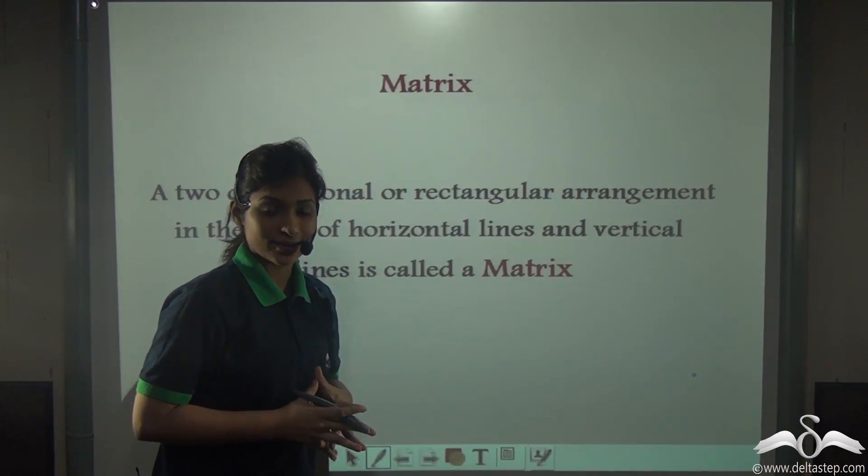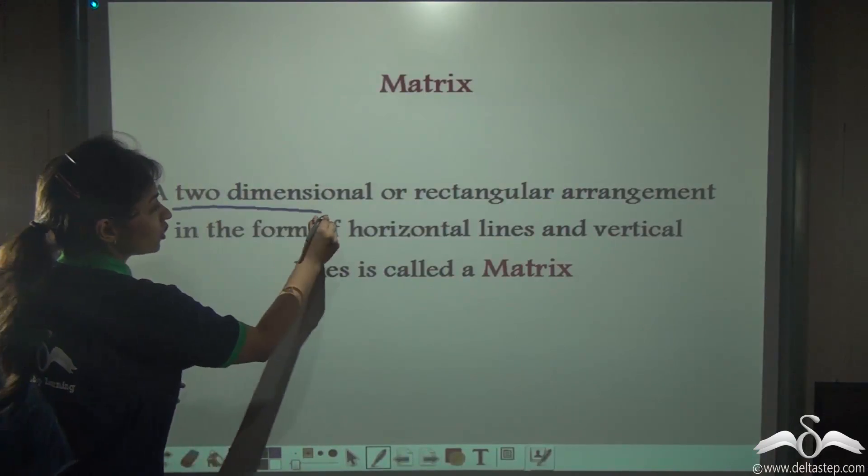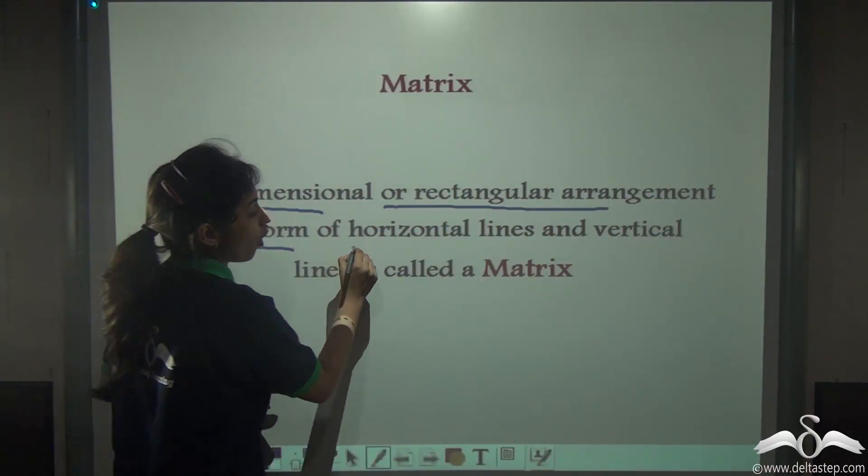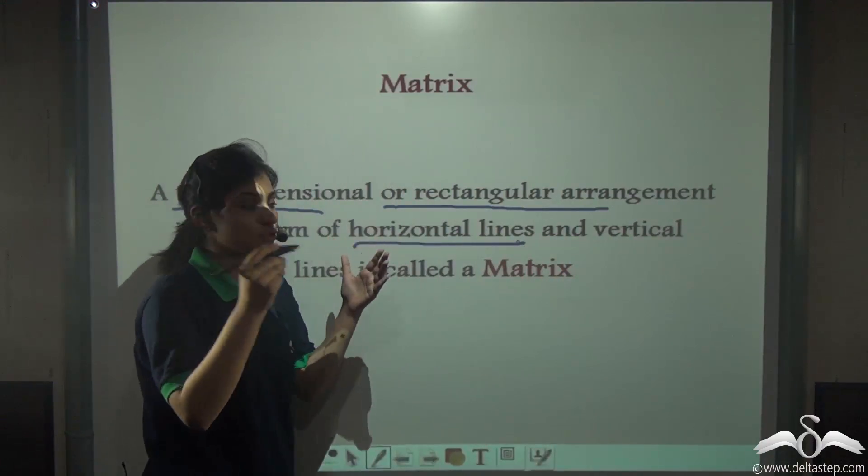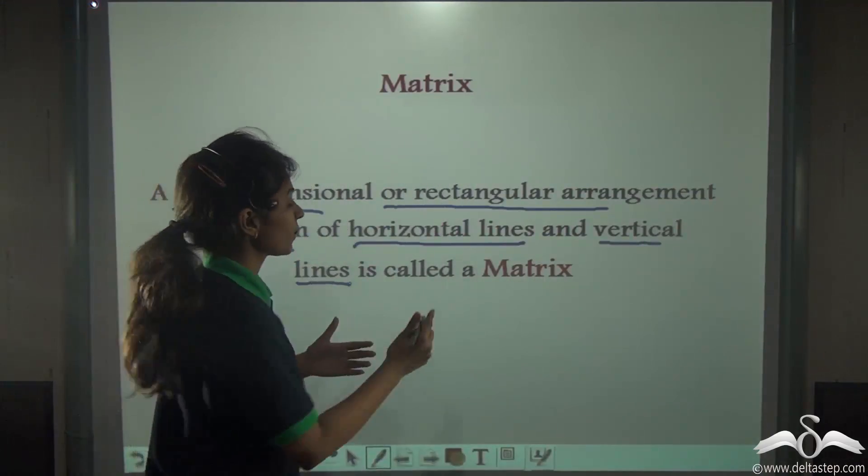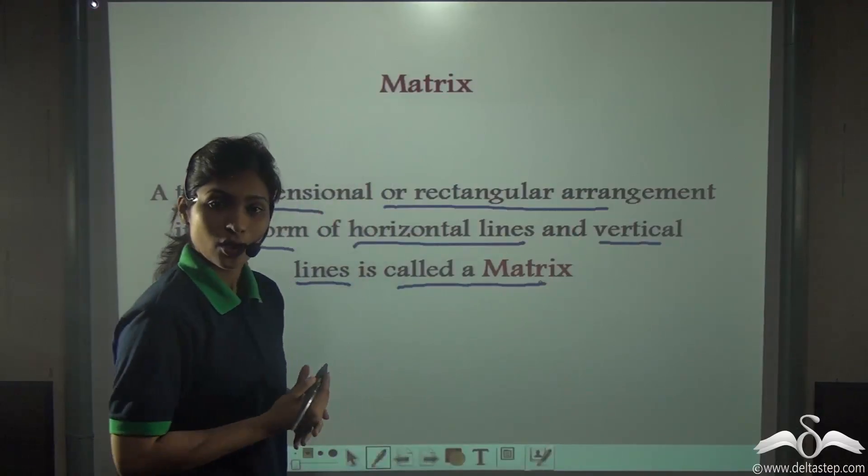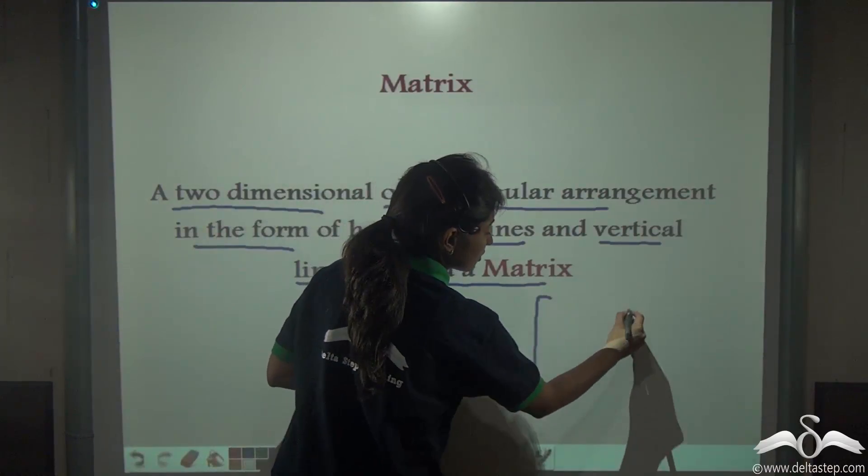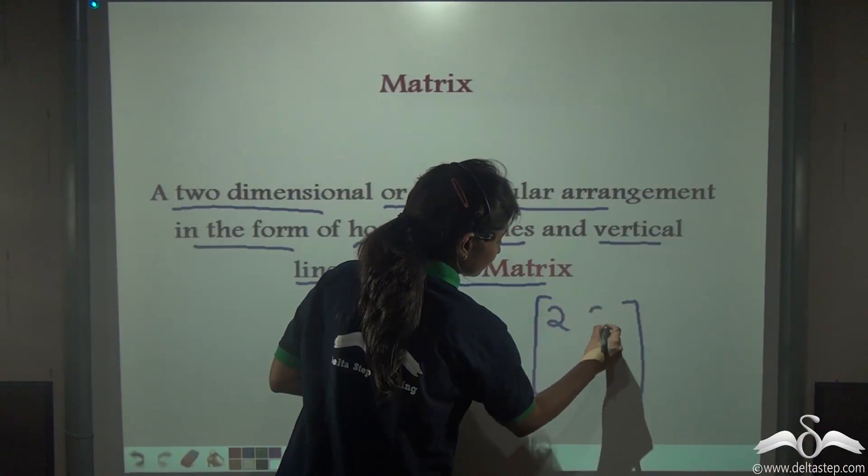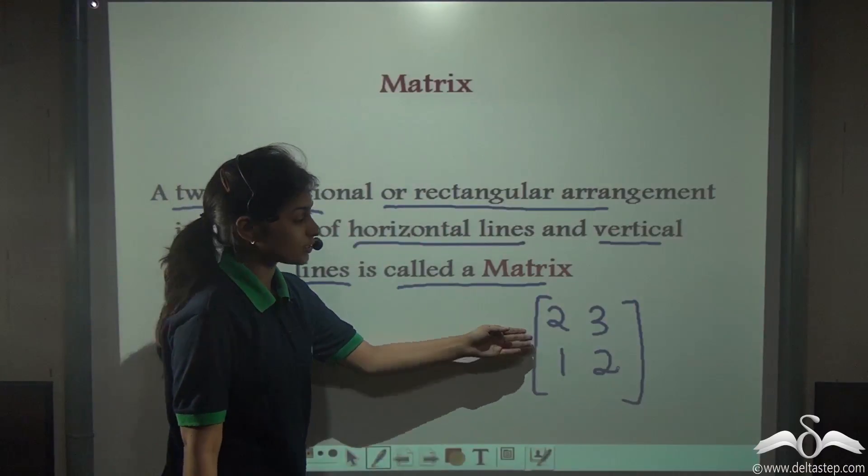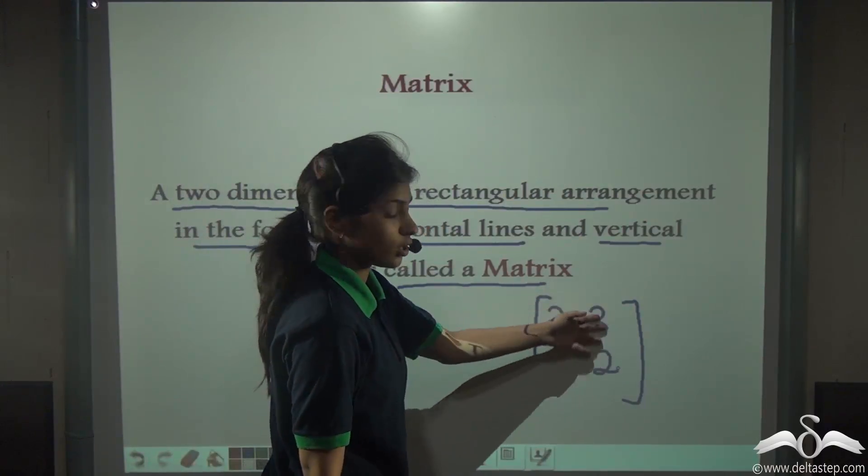You already know what is a matrix - a two-dimensional or rectangular arrangement in the form of horizontal lines that are the rows and vertical lines that are the columns is called a matrix. This is a matrix of order two by two; you can see two rows and two columns.